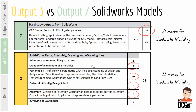Whereas when you were doing output 3, you have 22 marks go for your SOLIDWORKS modeling — over twice the amount. You have your creation of a minimum of five parts as 2 marks, your part models worth 10, your factor of difficulty and design intent worth 5, and your assembly worth 5. That means the amount of time your first model should take compared to your second one is roughly twice the length of time, and that also means your second one doesn't need to be nearly as complicated or as accurate as your first one.